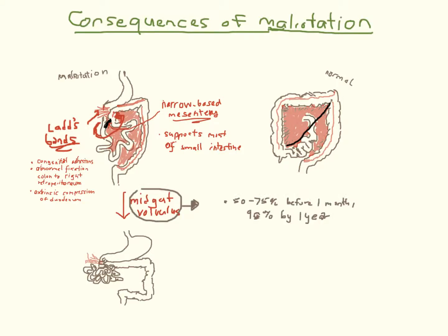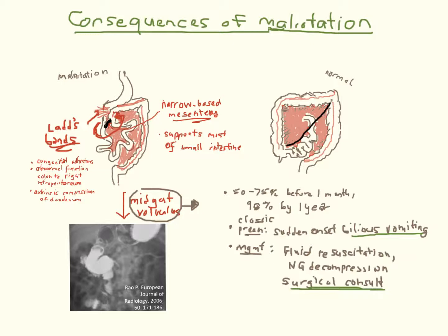Most cases occur in neonates. It presents as a high GI obstruction with sudden-onset bilious vomiting, and this is why all bilious vomiting in early life is volvulus until proven otherwise. In this setting, fluid resuscitation and immediate surgical consultation are priorities. Imaging may support the diagnosis, with an upper GI series showing contrast narrowing in the proximal small bowel, giving what's known as a corkscrew appearance. However, consultation should never be delayed for diagnostic studies, as bowel necrosis often begins within hours.